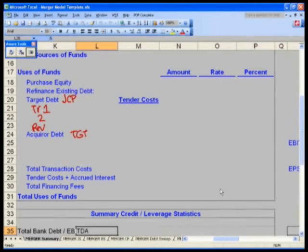Acquirer, Target, tranche 1, 2, and also their revolver. We're going to bring in those values in column L. We're going to get this from their debt schedules.